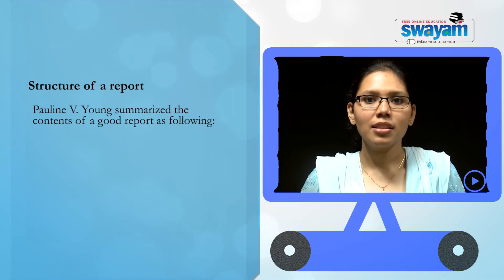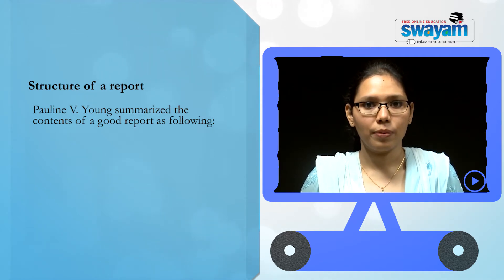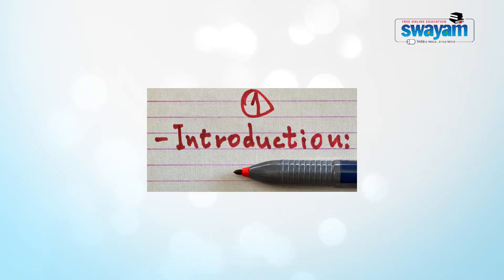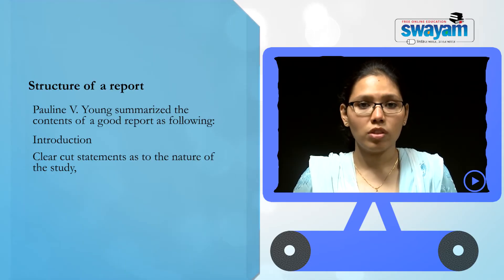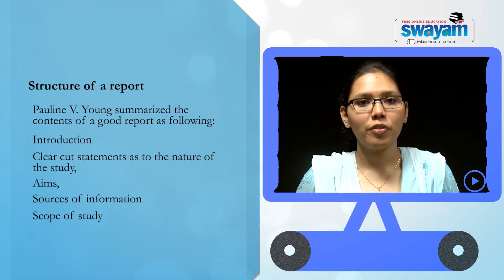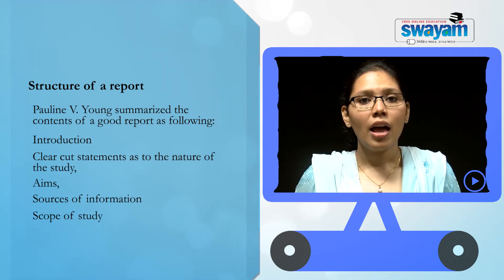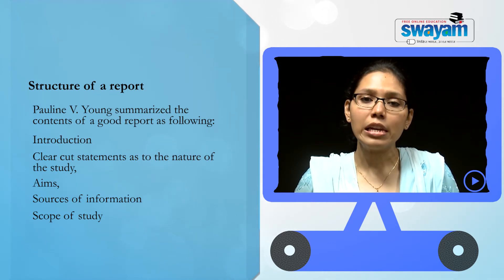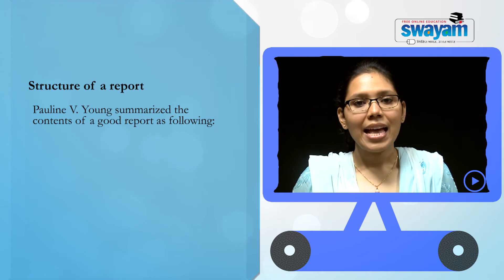Coming to the structure of a report — the following discussion of the structure is a general discussion of any report, not specifically a legal report. Pauline V. Young summarizes the contents of a good report as follows. First, the introduction must have clear, cut statements as to the nature of the study, aims, source of information, and scope of the study.